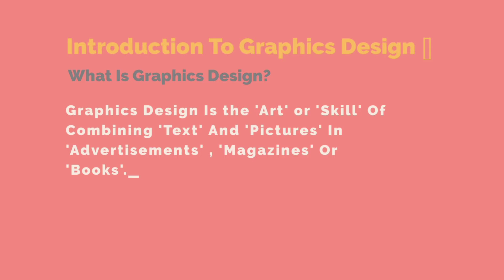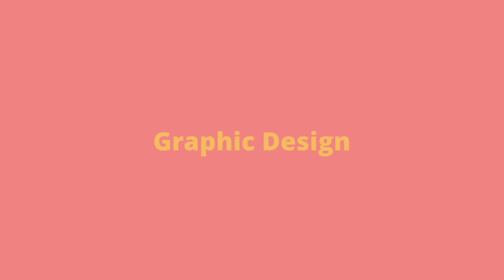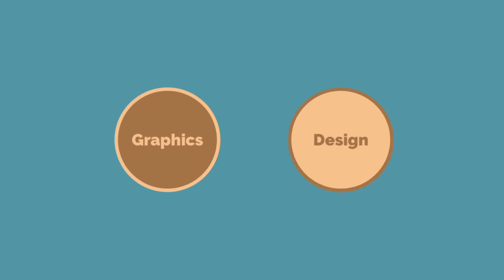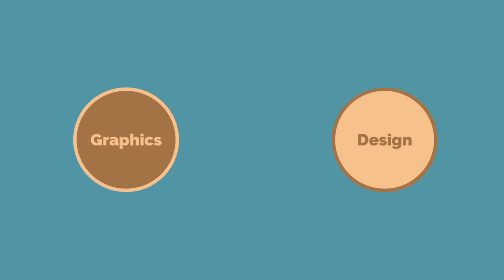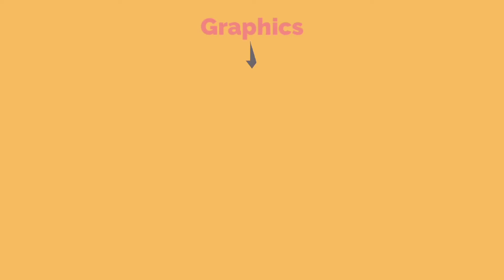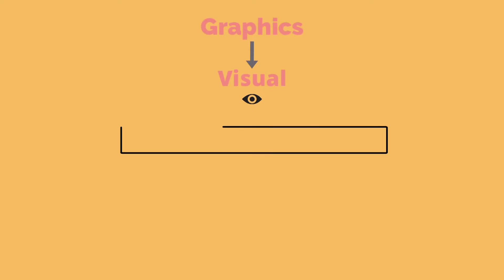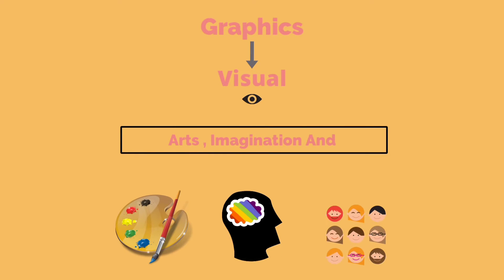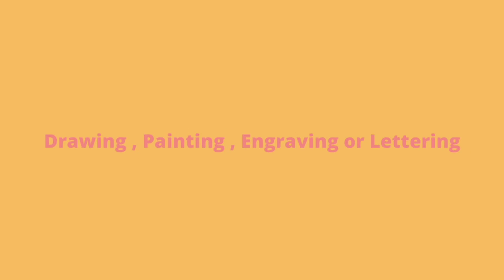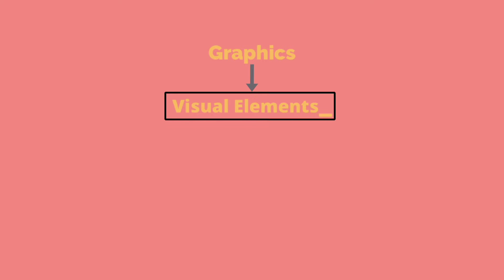We can also approach it by looking at the words that make up graphic design, which is graphics and design. Graphics means visual, which is related to arts, imagination, and expression, involving many mediums such as drawing, painting, engraving, or lettering, giving clear and explicit details. So the graphics part of graphic design is made up of visual elements, which is the backbone of design.